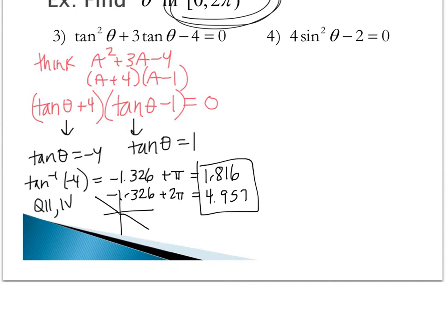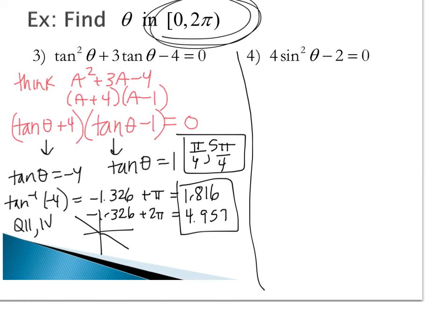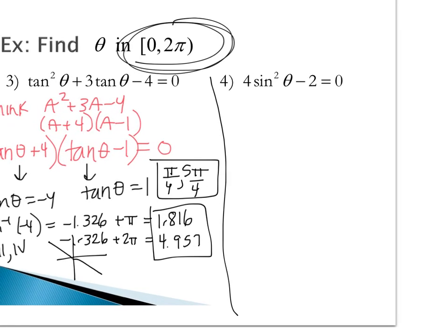There are my first two answers and then my other two answers occur when tangent equals 1. We know from the unit circle that those two answers are pi fourths and 5 pi fourths. In this case, we have two answers which are exact reduced fractions, and the other two answers are rounded decimals because of the types of values that they were.